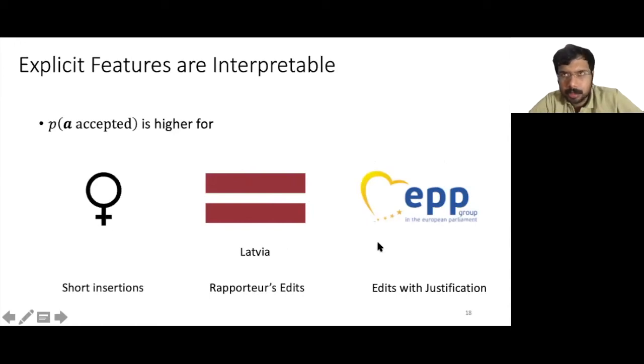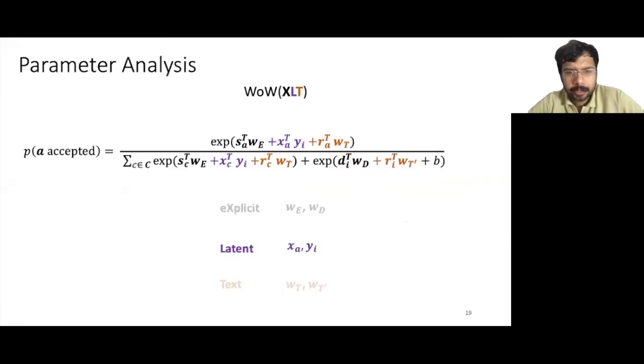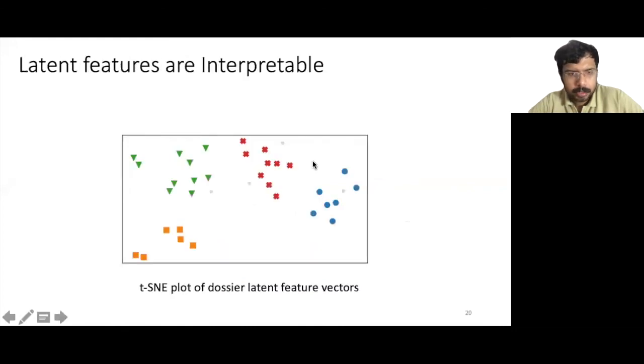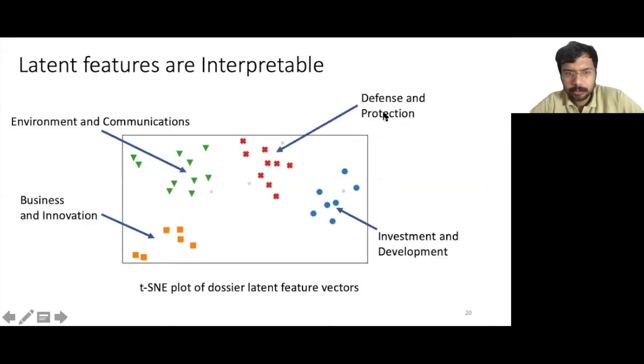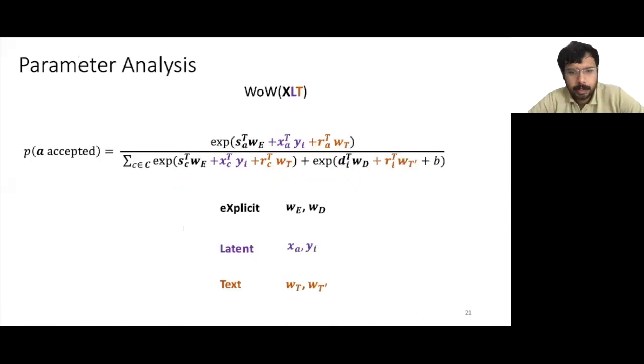Now we interpret the latent features. For this, we project the latent feature vectors yi for the dossiers to a lower dimensional space. This is the plot that we obtain when we do a t-SNE plot in two dimensions of the dossier latent feature vectors. Here we select the 40 dossiers who are at the extremes of the first two principal components. We can distinguish four clusters that correspond to dossiers that are broadly related to these four topics of defense and protection, investment development, business and innovation, and environment and communications.